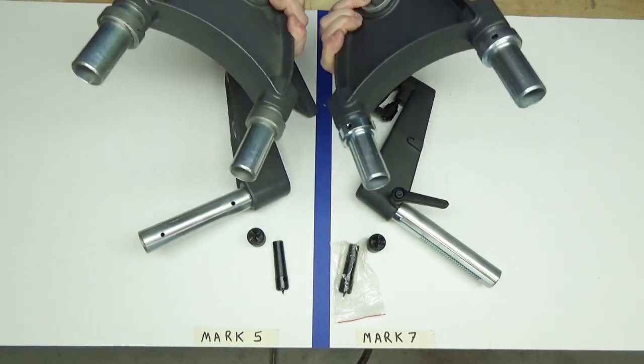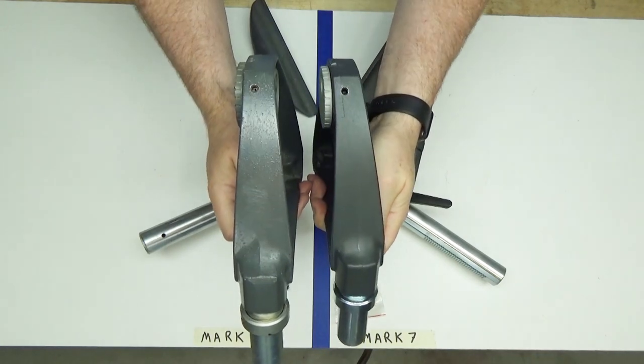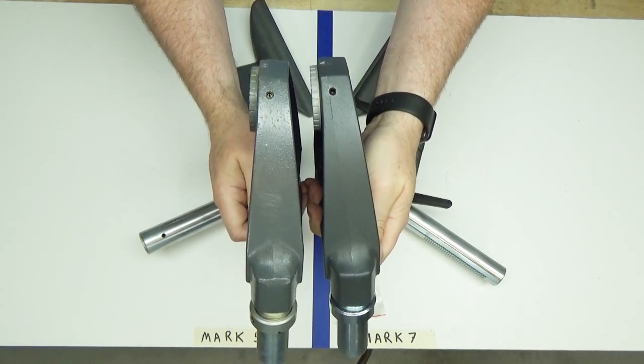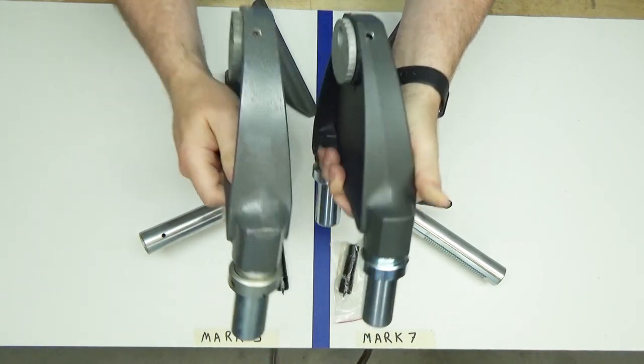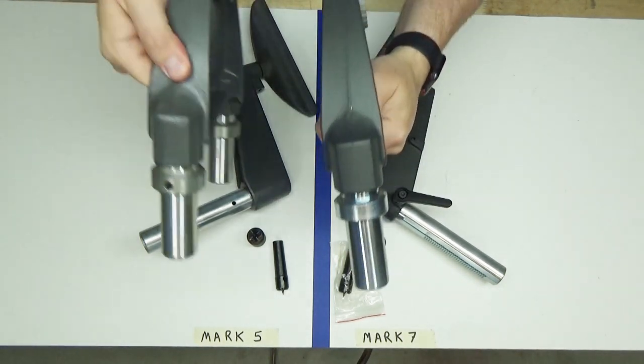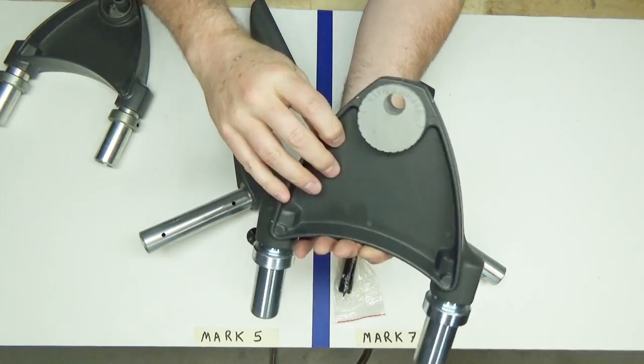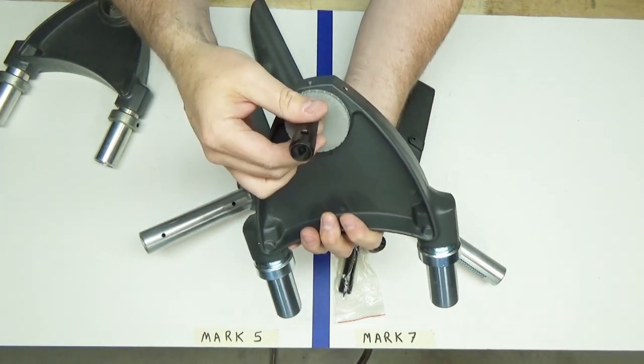The tail stocks look very similar. Some minor differences in the casting. Both of these tail stocks have a set screw adjustment on the front side of the machine. But only the Mark VII has the set screw adjustment on the back side of the machine. So that gives some flexibility in aligning the position of your cup centers.